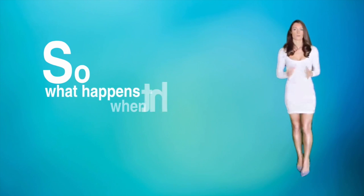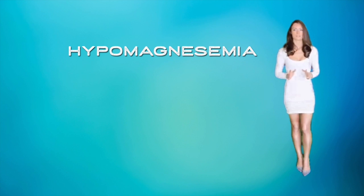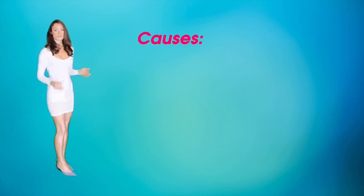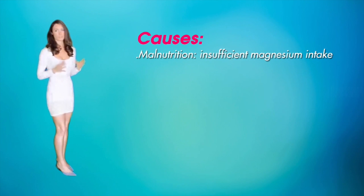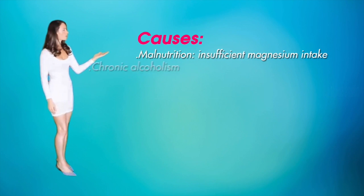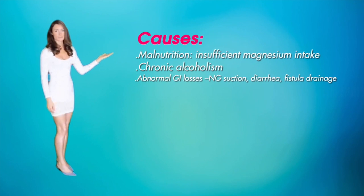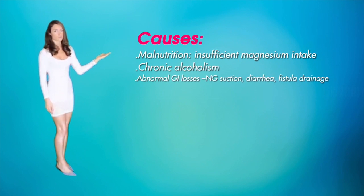So what happens when your magnesium is imbalanced? Hypomagnesemia is a magnesium deficit with a total serum magnesium less than 1.5. Causes include malnutrition, insufficient magnesium intake, chronic alcoholism, abnormal GI losses, nasogastric tube suctioning, diarrhea, and fistula drainage.